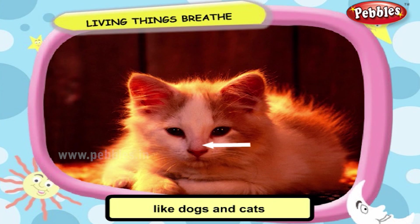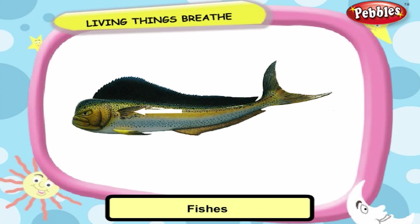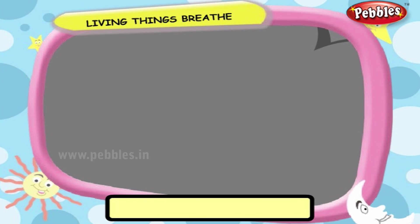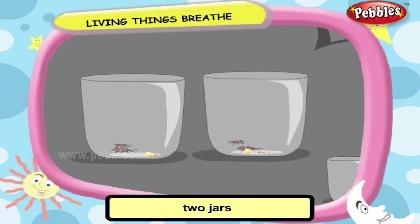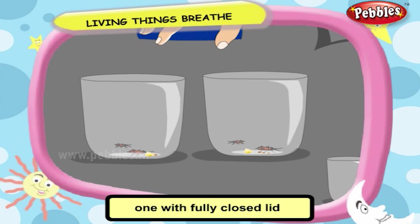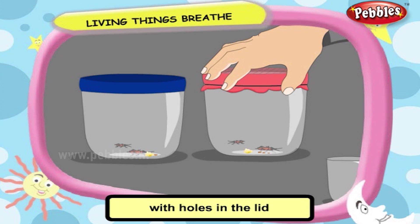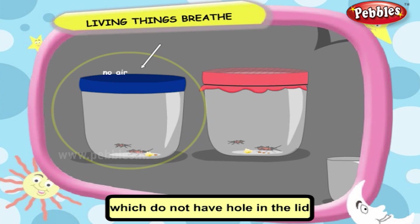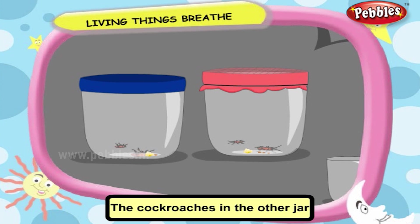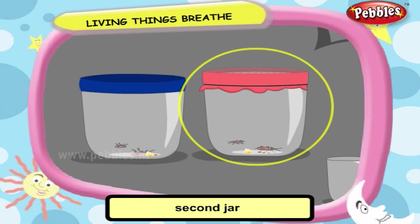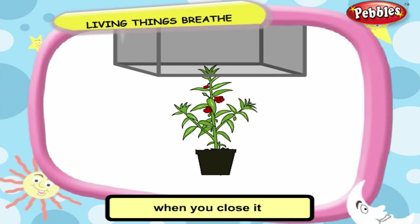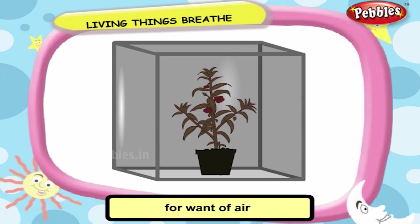Animals like dogs and cats breathe through their lungs. Fishers breathe through gills. Frogs breathe through air holes. Take two jars with live cockroaches inside — close one jar with a fully closed lid and another jar with holes in the lid. Leave them for a day or two. The cockroaches in the jar with no holes in the lid die. The cockroaches in the jar with holes survive because they had a supply of air. Likewise, a potted plant kept in the open survives, but when you close it with a box, it will also die for want of air.